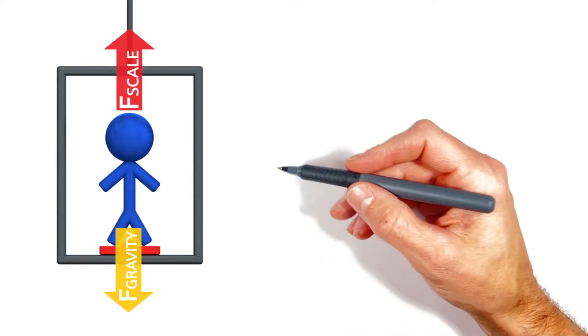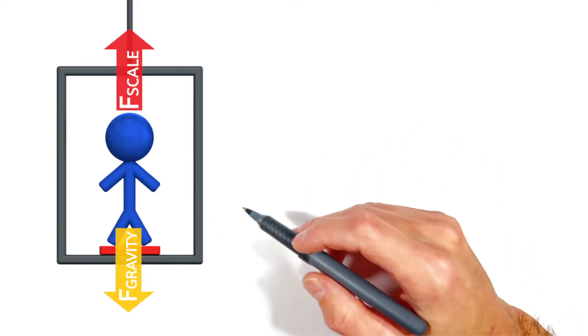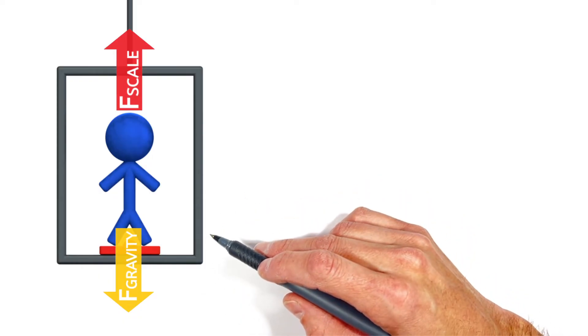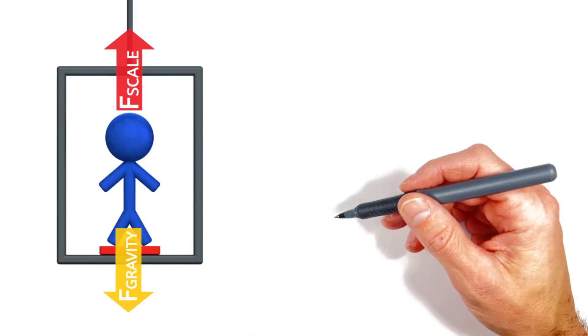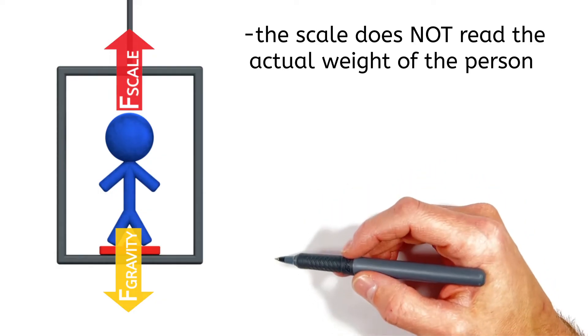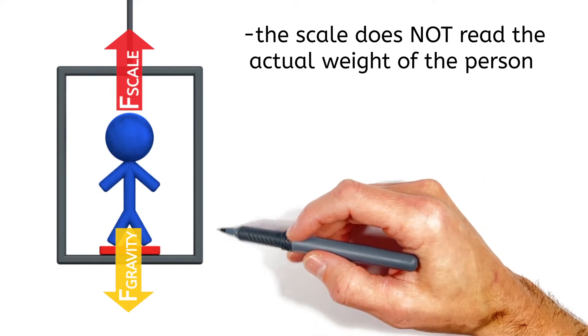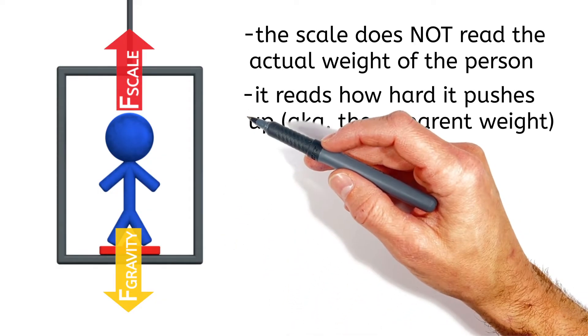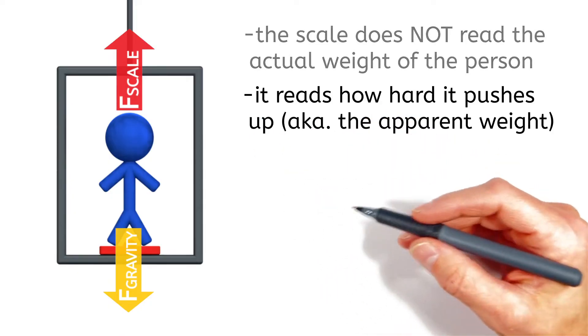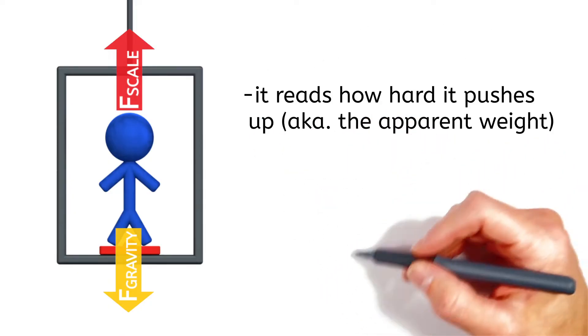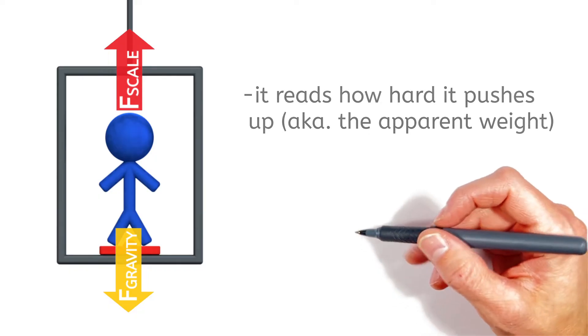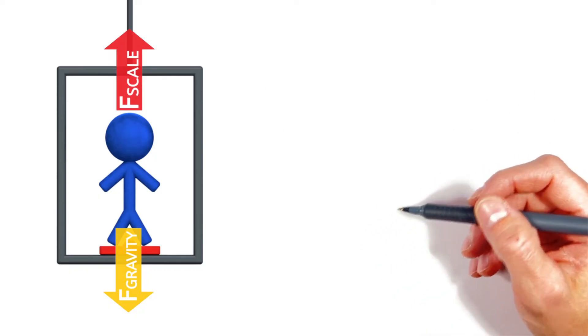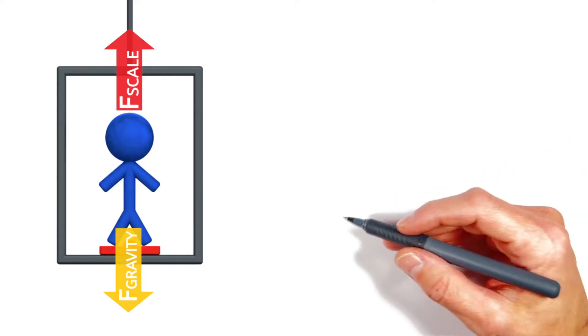Now where most people get stuck on this problem is in just what the scale actually reads. So when you stand on a scale, the scale doesn't read how hard gravity is pulling down on you. Instead, the scale reads how hard it's having to push up. I mean, just try jumping up and down on a scale. You'll see the scale reading go up and down, not because you suddenly weigh more or less, but because the scale isn't having to push consistently on you.